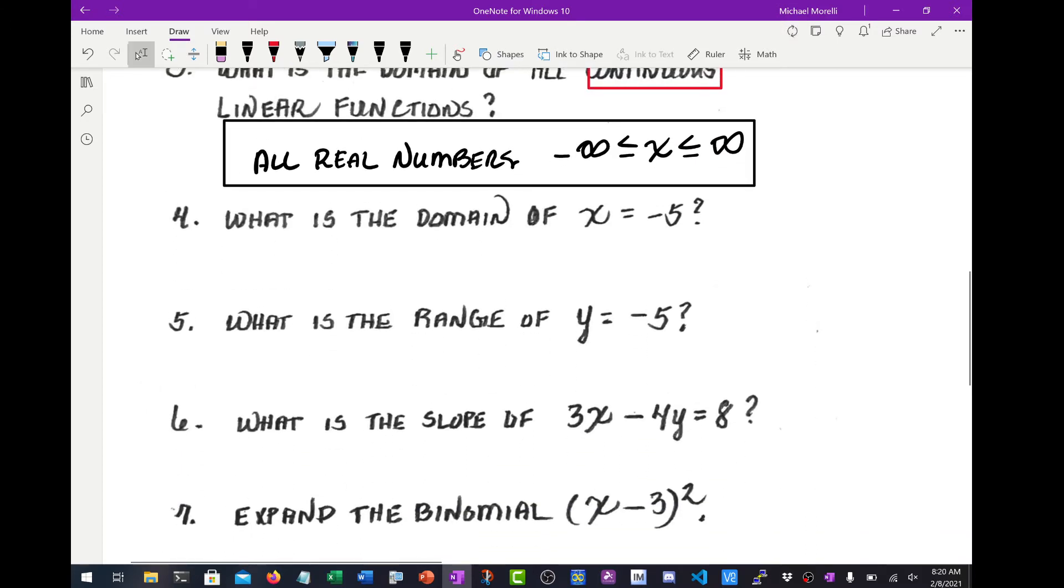Number 4, what is the domain of X equals negative 5? This is a bit of a trick question. X equals negative 5 is a vertical line passing through negative 5 comma 0 on the X axis. So the domain is literally just negative 5, since that's the only X value that this takes on. This is not a function. Remember X equals negative 5 is not a function.